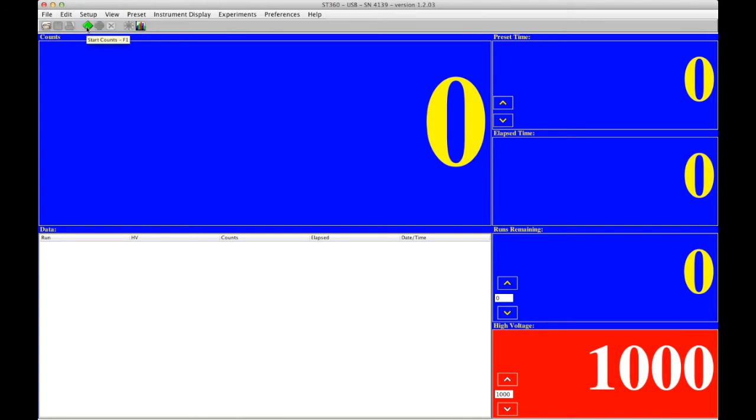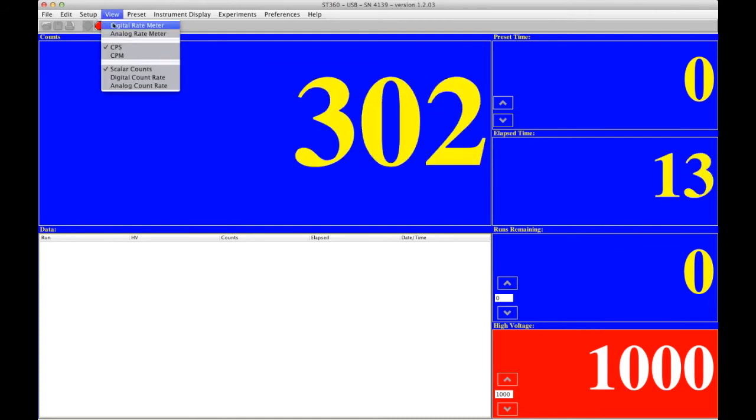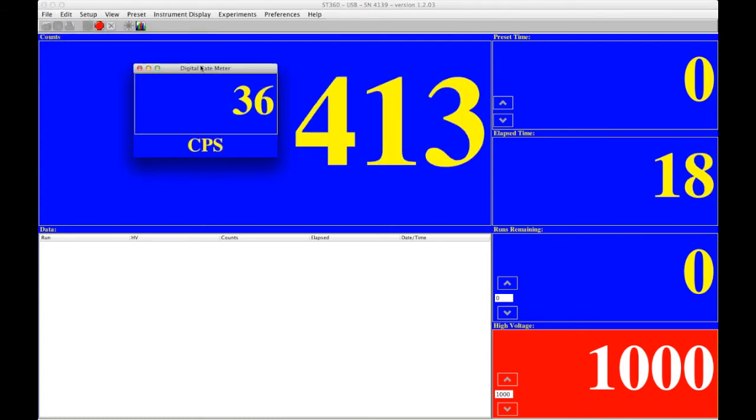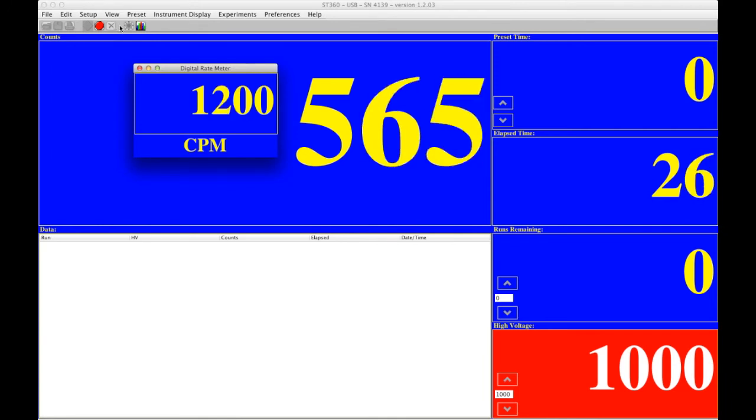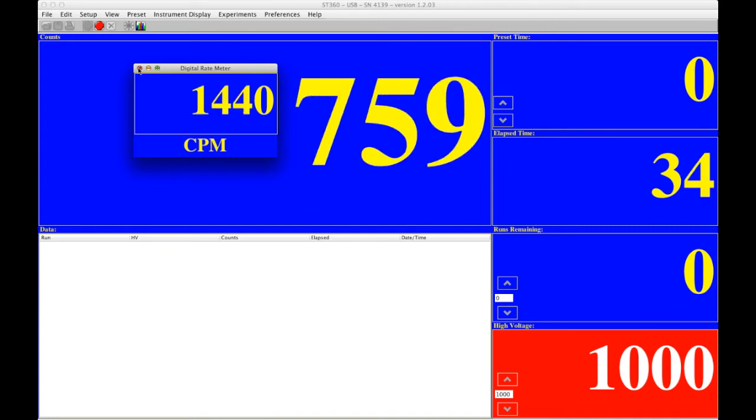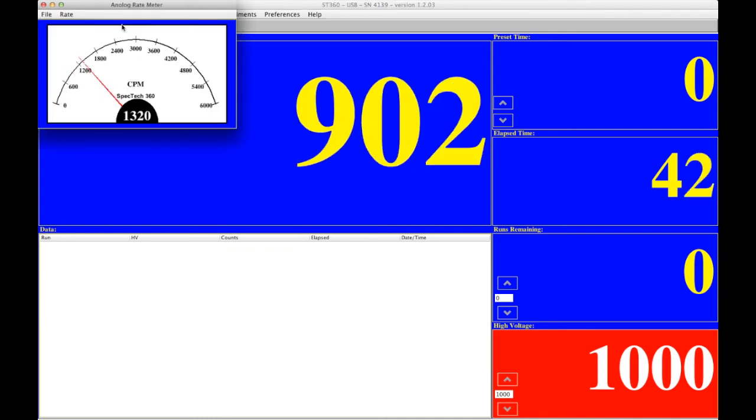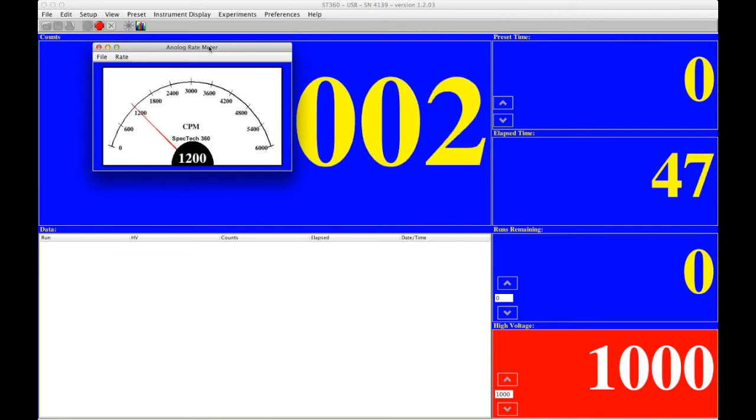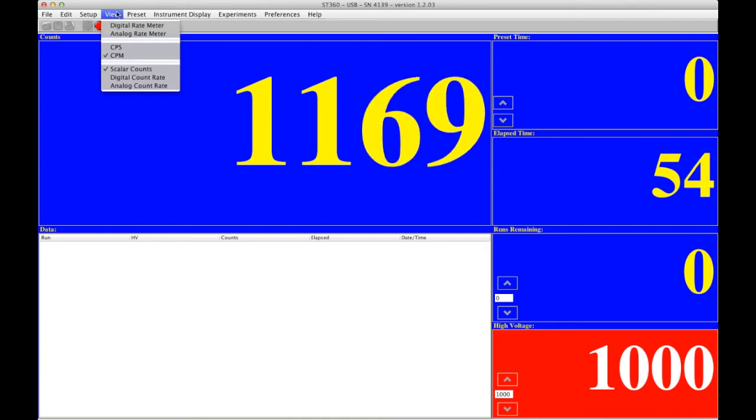With the green button here, that's to start counts. And we will just count background. You can see the elapsed time here on the right. There is no preset time, so this is continuous counts. Digital rate meter. This is 17 or 36 CPS. Change that to CPM. Digital rate meter, about 1,200, 1,500, 1,700, 1,800. It's all over the place. That's CPM. And for those of you who still like analog, we have the analog rate meter.